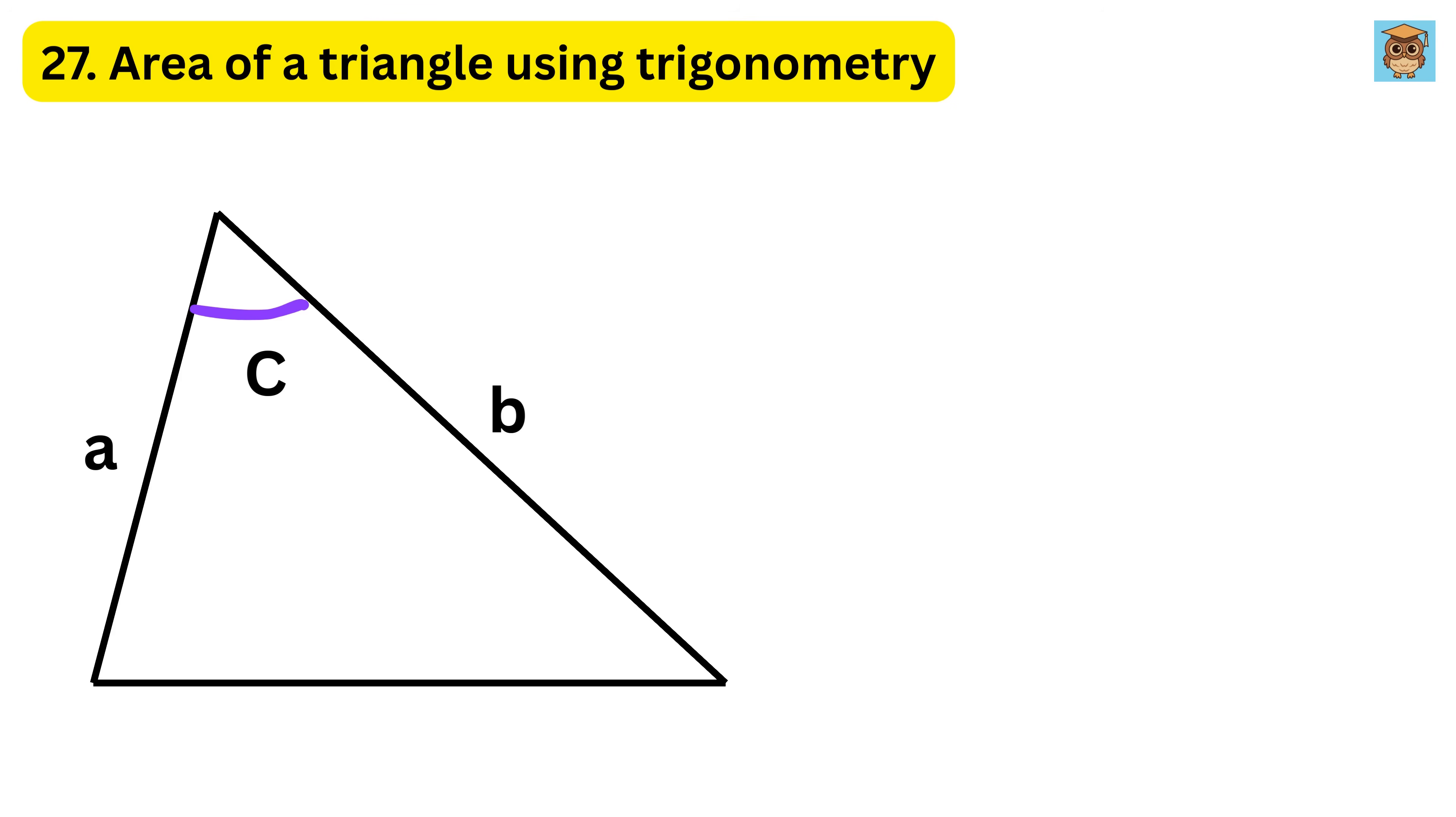27. To find the area of a triangle using trigonometry, we can use the formula one half times two sides times the sine of the angle between them. For example, if the sides are 3 centimeters and 4 centimeters, and the angle between them is 60 degrees, the area is one half times 3 times 4 times sine 60.